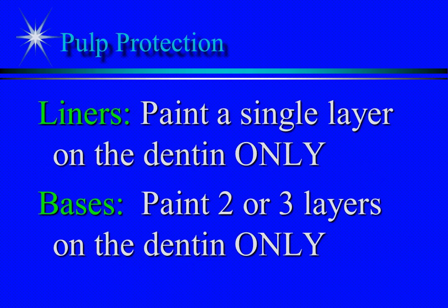The difference between calling something a liner or a base is the thickness of the pulp protection material applied. Some materials are only used as liners, such as calcium hydroxide, and some are only used as bases, such as IRM. The material is prepared to about the consistency of nail polish — applied in layers, allowing each to dry before applying another. This is an example of a dual-cured material.